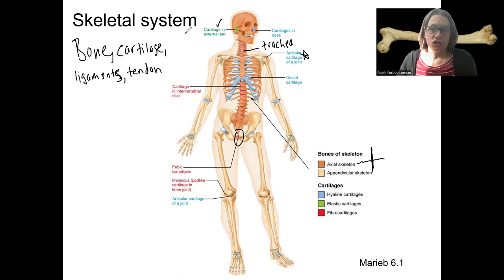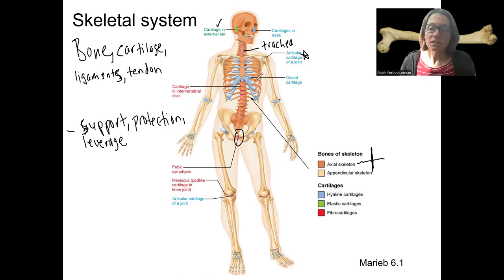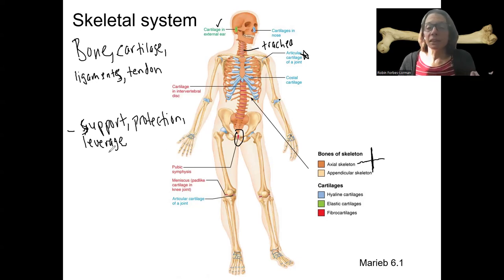The functions of this organ system — the most obvious ones are support, protection, and leverage. The bones themselves provide the structural support of the body and support the internal organs, really important internal organs inside the skull, vertebral column, rib cage, and sternum. Leverage is primarily for movement — having an anchorage for things to move.